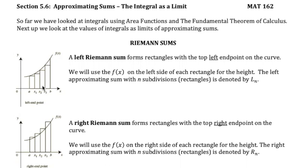There's different ways to form your rectangles. In a left Riemann sum, you put the top left corner on the function and create rectangles that way. And that's going to be denoted with L sub n.